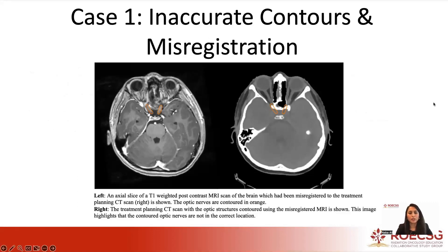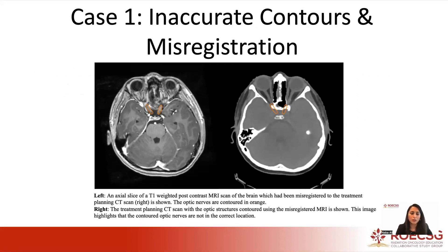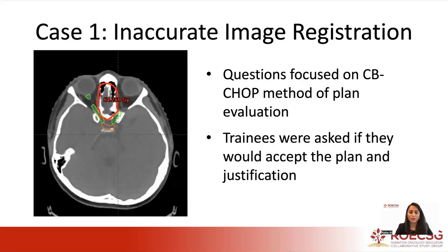The first case was of inaccurate contours and misregistration. This was a patient receiving adjuvant radiation for a high-grade glioma. On the CT simulation scan, the optic structures were incorrectly contoured because the MRI was incorrectly registered to the CT simulation scan. What resulted was that the optics appeared to be meeting their constraints on the DVH. However, when you looked more closely at the dose overlay and the contours, you could see that they were actually receiving over 60 gray.